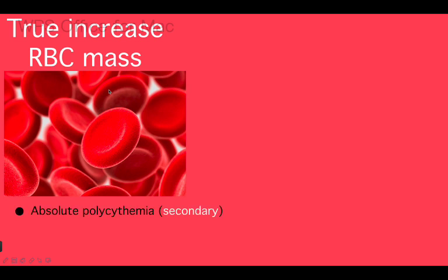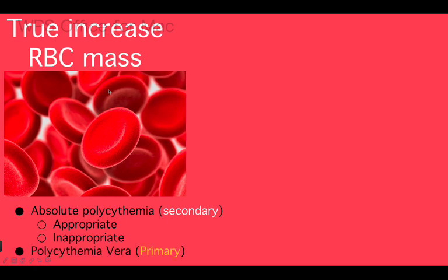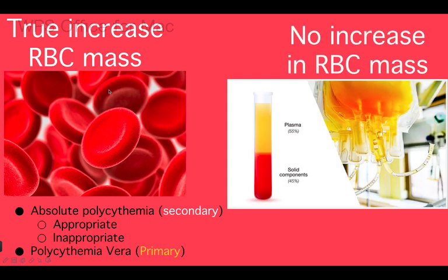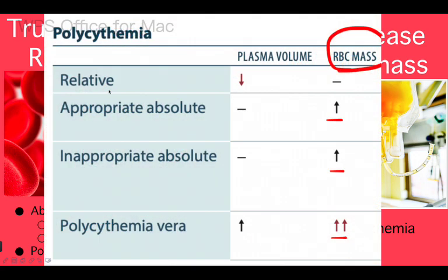The true polycythemia category has two subtypes: secondary polycythemia, driven by erythropoietin — either appropriate or inappropriate — and primary polycythemia, which occurs without any erythropoietin signal. There is also relative polycythemia, which shows increased hematocrit but no true increase in red blood cell mass, just a decrease in plasma. The First Aid table shows that relative polycythemia is the only type with no real increase in red blood cell mass, while all other types involve a true increase.